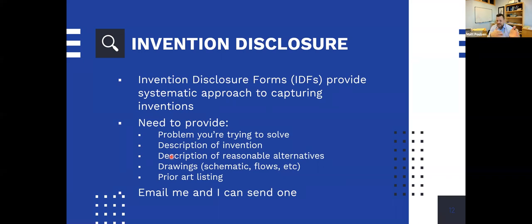If you don't disclose known prior art, that's actually grounds for invalidating your patent — especially if you did it knowingly. If you accidentally did it they're a little easier on you, but it can definitely cause big problems. If you want a generic invention disclosure form for your own purposes, shoot me an email — I have one, no problem.